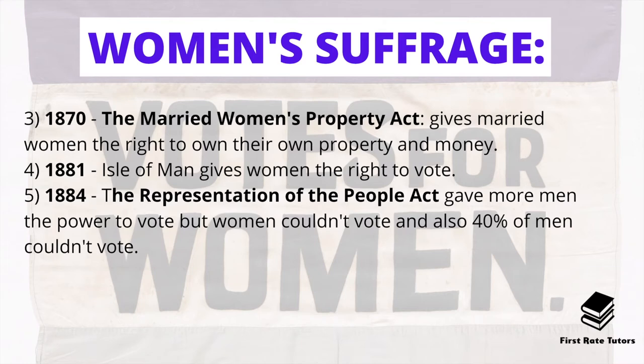In 1870 the Married Women's Property Act was passed, giving married women the right to own their own property and money, so they were no longer seen solely as the property of their husbands. They had a bit more freedom and autonomy over their own property. Notably, well before women gained the right to vote in England as a whole, the Isle of Man — a small island — actually gave women the right to vote in 1881, so they were well ahead of the curve.